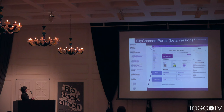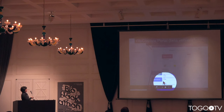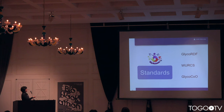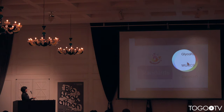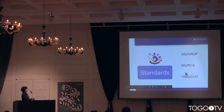The beta version was released in October. We have the resources at the top and the standards at the bottom. The standards include glyco-RDF, which we developed many years ago in the biohackathon. There's a string representation for carbohydrates called WORX, and there's a new glyco-conjugate ontology called Glyco-Ku.